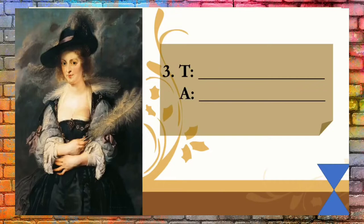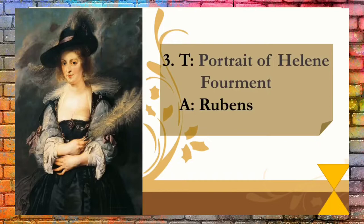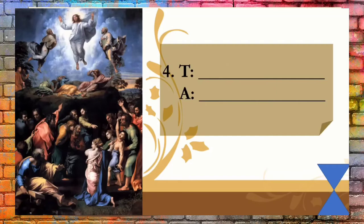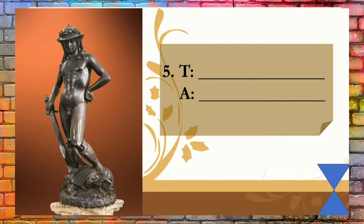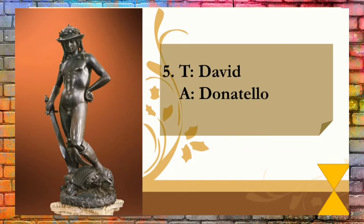What is the title of this artwork and who made it? That's right! This is the Portrait of Helene Fourment, painted by Rubens. What is the title of this artwork and who made it? Wow, very good! This is the Transfiguration, made by Raffaello. What is the title of this artwork and who made it? Good job! This is David, made by Donatello.